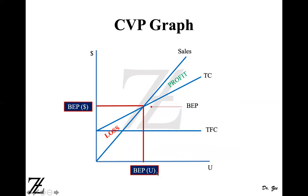The break-even point in units tells you how many units you need to sell in order to reach the break-even point — whether that's 10,000, 12,000, or 50,000 units. The y-axis break-even point in dollars tells you how much dollar sales you need to make to reach break-even — whether it's $1 million, $2 million, or $10 million in sales.